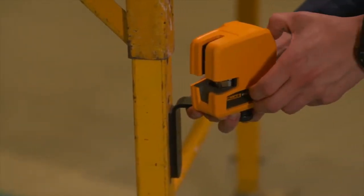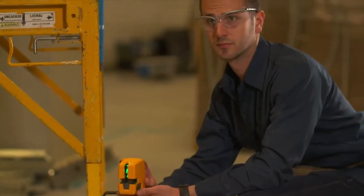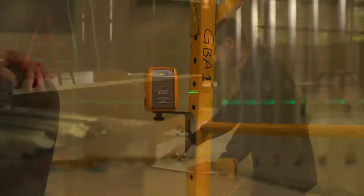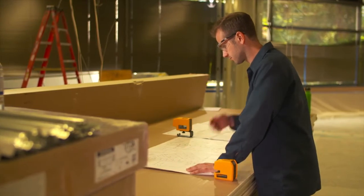A magnetic wall bracket provides stable mounting for fast layout, and you can toggle between presets with one button. Transfer layout points from drawings to ceilings faster and more accurately than in the past.